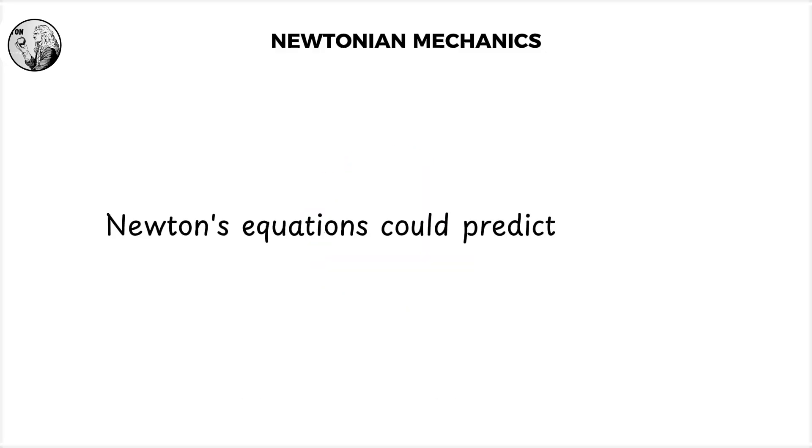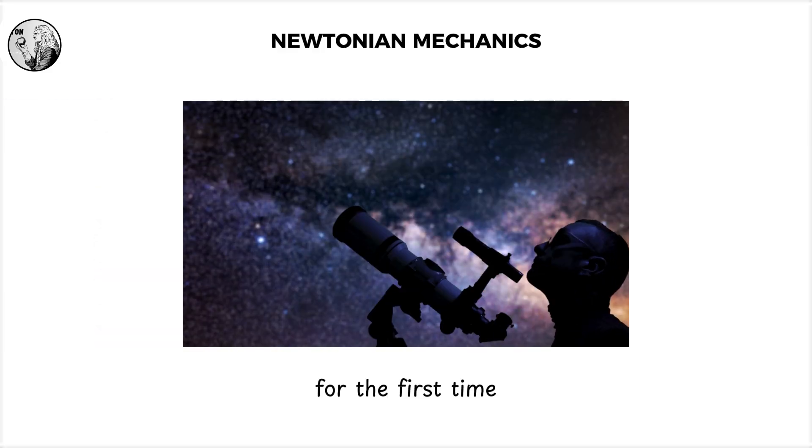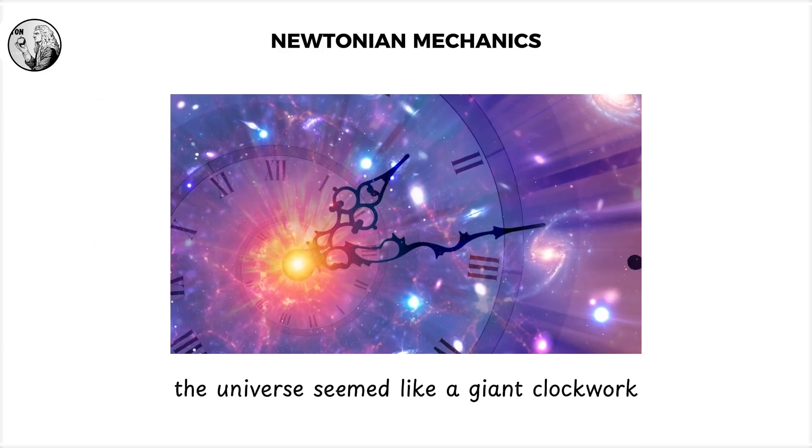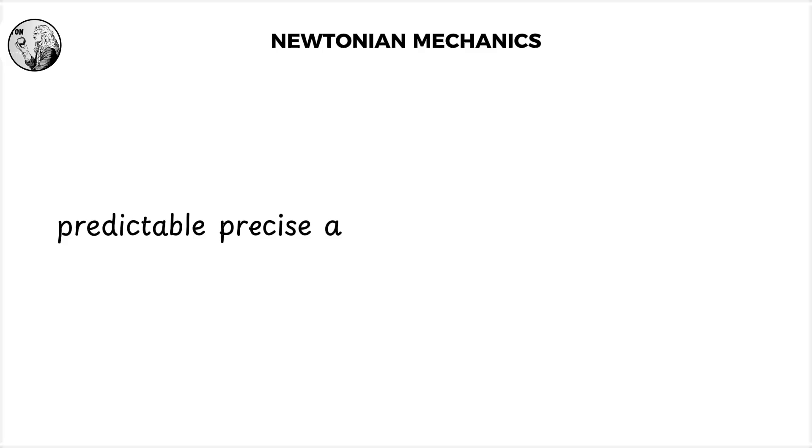Newton's equations could predict everything from the arc of a cannonball to the dance of planets over centuries. For the first time, the universe seemed like a giant clockwork, predictable, precise, and governed by universal laws.